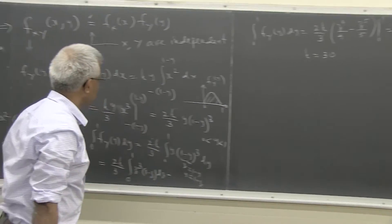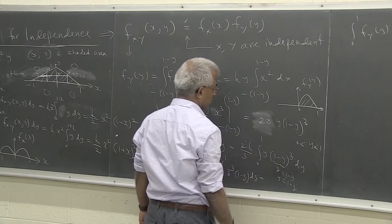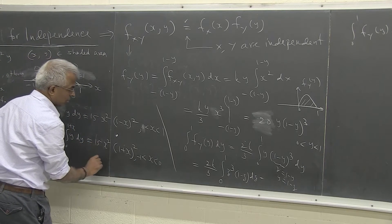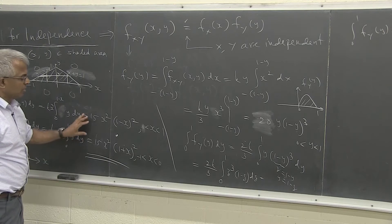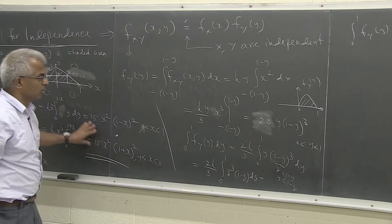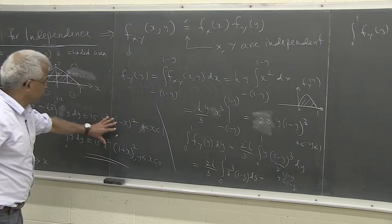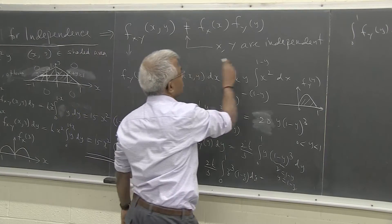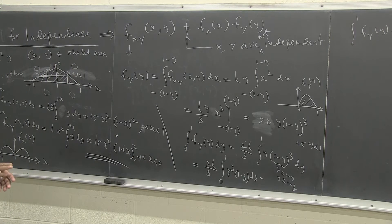So k = 30. Substituting k = 30 into f_X(x) gives the coefficient 15, and into f_Y(y) also simplifies accordingly. We can verify this is correct by checking that integrating the joint density over the full region also gives 1. Now, f_X(x) is this function and f_Y(y) is this function — clearly f(x,y) ≠ f_X(x)·f_Y(y), so we conclude the two random variables are not independent.